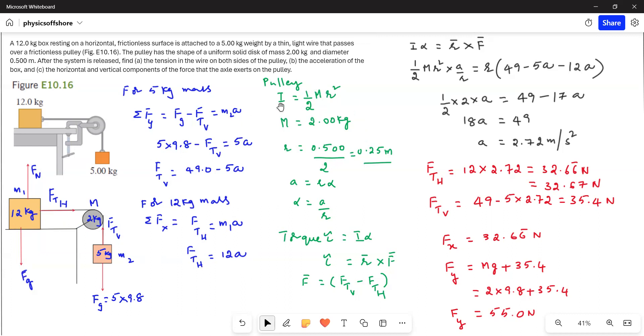Now coming to the pulley. For the pulley, the moment of inertia is equal to half mr squared, and mass is 2 kg, r equals 0.25 meters.